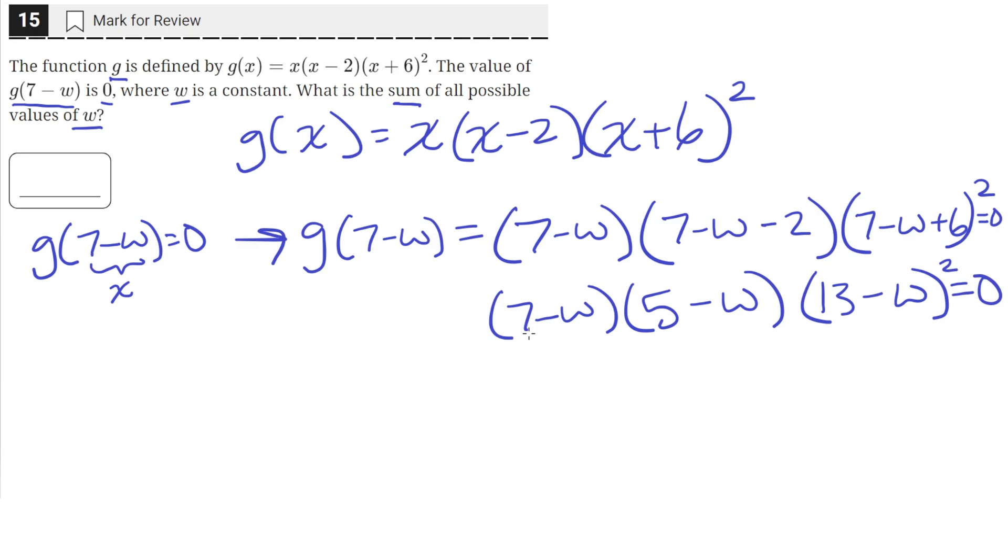So now we have three different sets of parenthesis all being multiplied, and the product equals 0. So we know that for the various solutions to this equation happens when any of these parenthesis equals 0. So for the first parenthesis, the quantity 7 minus w equals 0 when w equals 7. 7 minus 7 equals 0, and then 0 multiplied with anything is just equal to 0. So this value of 7 satisfies the equation.